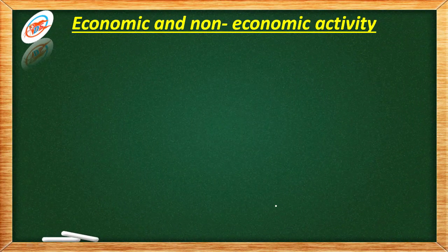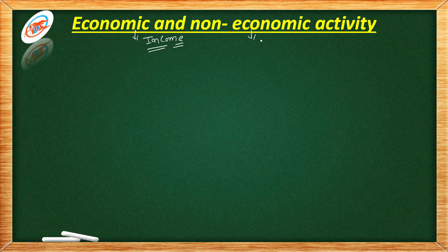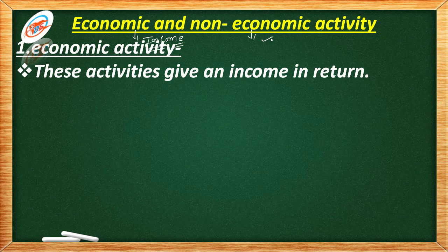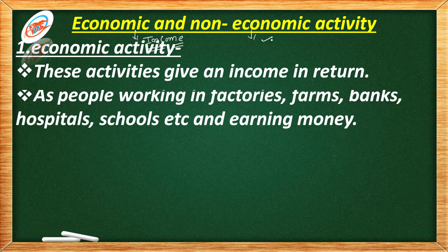Now we talk about economic and non-economic activity. If you are doing any work and in return you receive income, then it is an economic activity. But if you are not getting any income, it will be considered a non-economic activity. Economic activities give income in return — for example, people working in factories, farms, banks, hospitals, schools, etc. They are doing work and getting money in return, that's why they are economic.